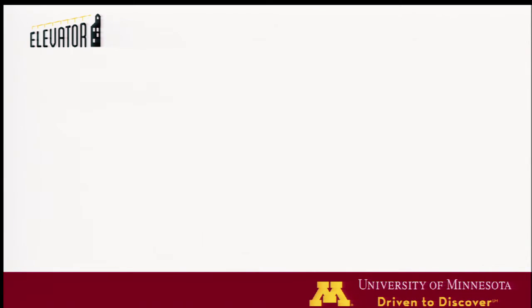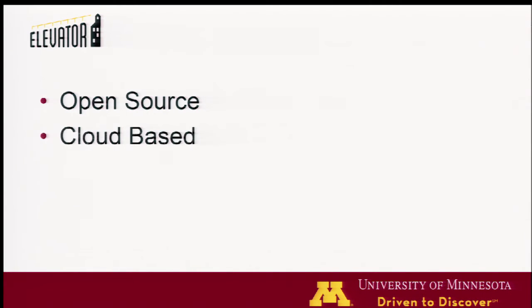The new tool is called Elevator. Elevator is an open source tool — it's up on GitHub, and we're really excited about getting partners who want to collaborate actively on this. It is cloud-based; this is how we deal with those scaling costs. It all runs on Amazon AWS — we're using EC2 and S3 and all the wonderful things Amazon provides, which means we can scale nicely and linearly. It's very easy and very granular for us to grow the tool.